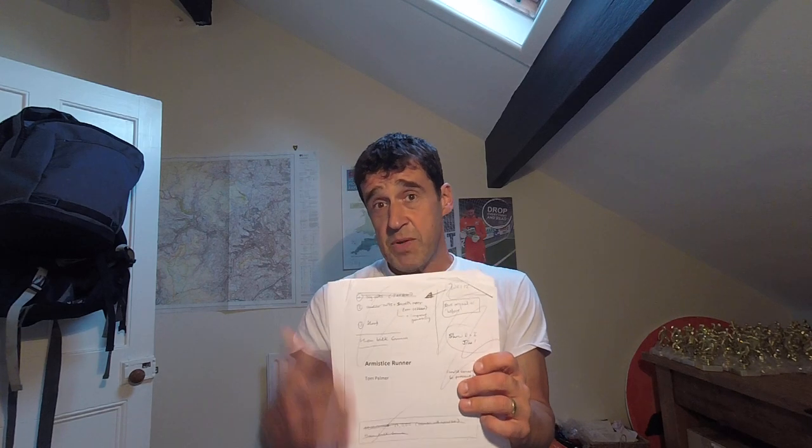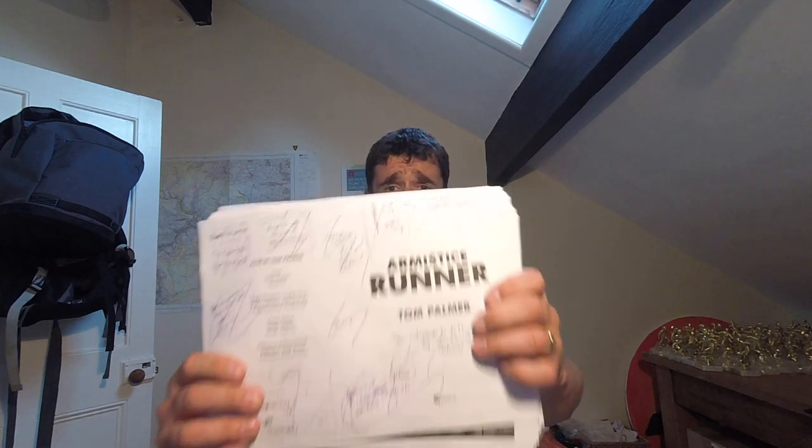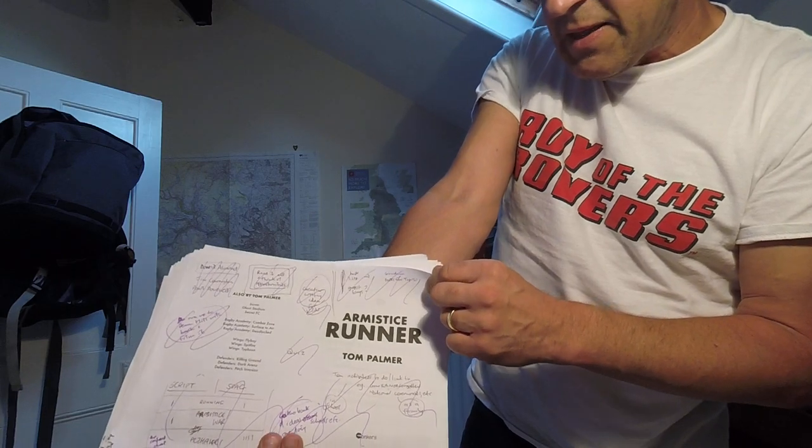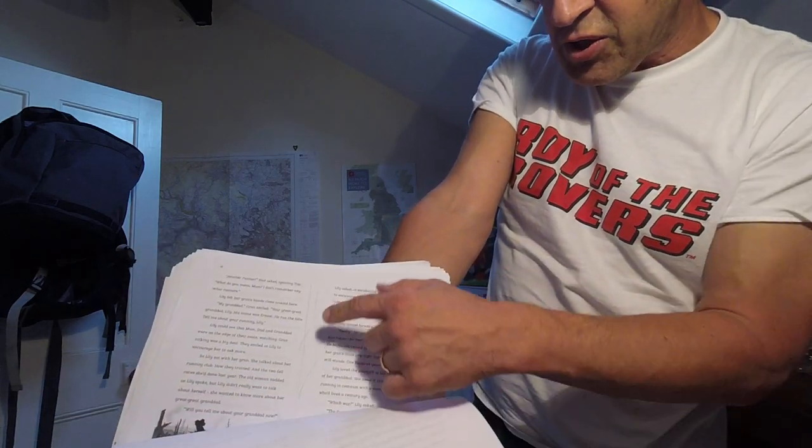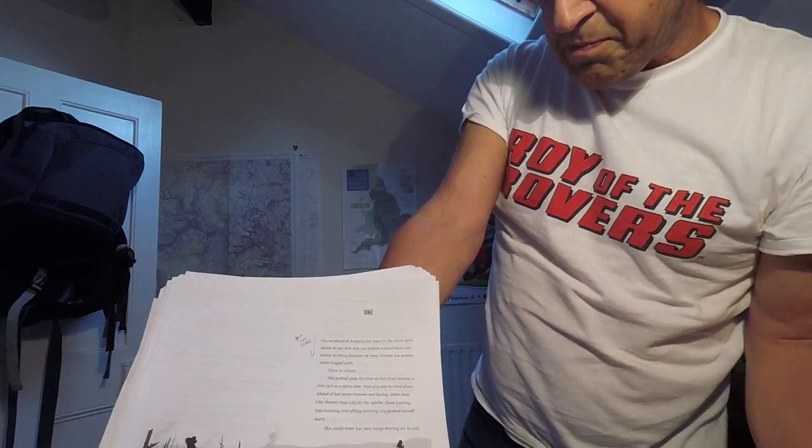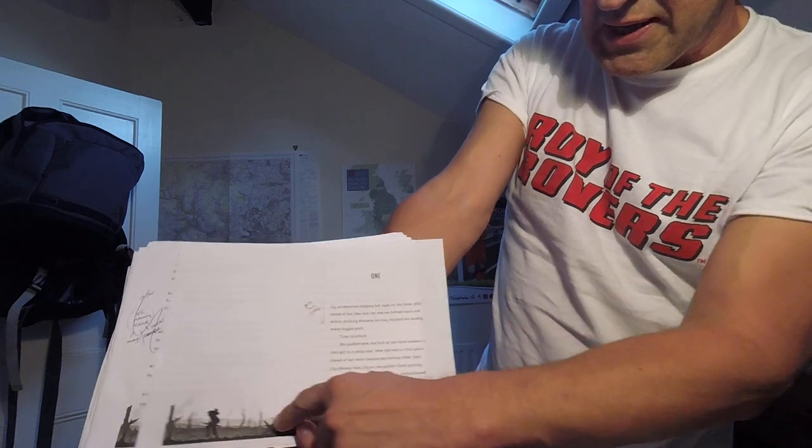Once I've written that and a publisher likes it and says they want to publish it, the publisher then edits it with me - they read through it and tell me lots more things where I could improve it, a bit like your teacher does. Then they do what's called typesetting it, so they turn it into this, which looks a lot more attractive and better designed than my script. This is called a proof copy - the page proofs - and I've just been through it and double checked that I'm happy with everything. It actually shows you what the pages will look like, with those illustrations on the bottom.